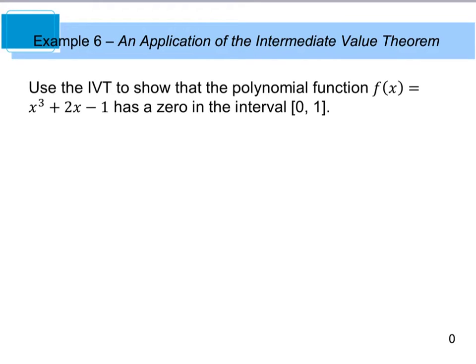Example 6 says to use the intermediate value theorem to show that the polynomial function f(x) = x³ + 2x - 1 has a zero on the closed interval [0, 1].